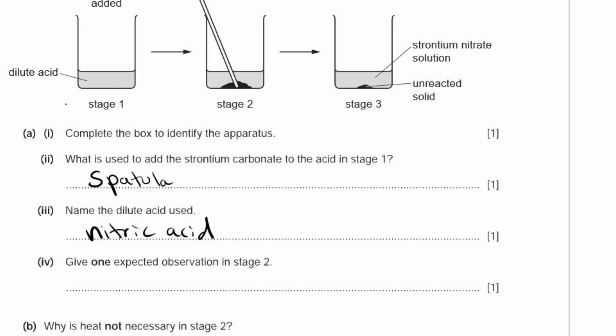A4. Give one expected observation in stage 2. Stage 2 is where we're having a carbonate react with an acid, and when that happens, you get bubbles. Another nice word you could use is effervescence, which is just a fancy way of saying bubbles. What you cannot say is a gas is given off, because that is not an observation. You know it is a gas, but a gas is invisible. You're seeing the bubbles, the effervescence. Make sure when you put an observation, you say what you see, or hear, or smell, not what you know.